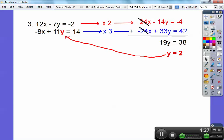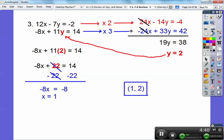It looks like right there. So 11 times 2 is 22. Subtract off the 22 on both sides. You get 14 minus 22 is negative 8. So x equals 1. So your answer is always x, y. So 1, 2.